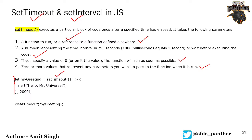Here is a simple structure of our method where we have a setTimeout using an arrow function, and we're just having an alert saying 'Hello Mr. Universe'. We are saying it is going to show the alert after 2000 milliseconds.